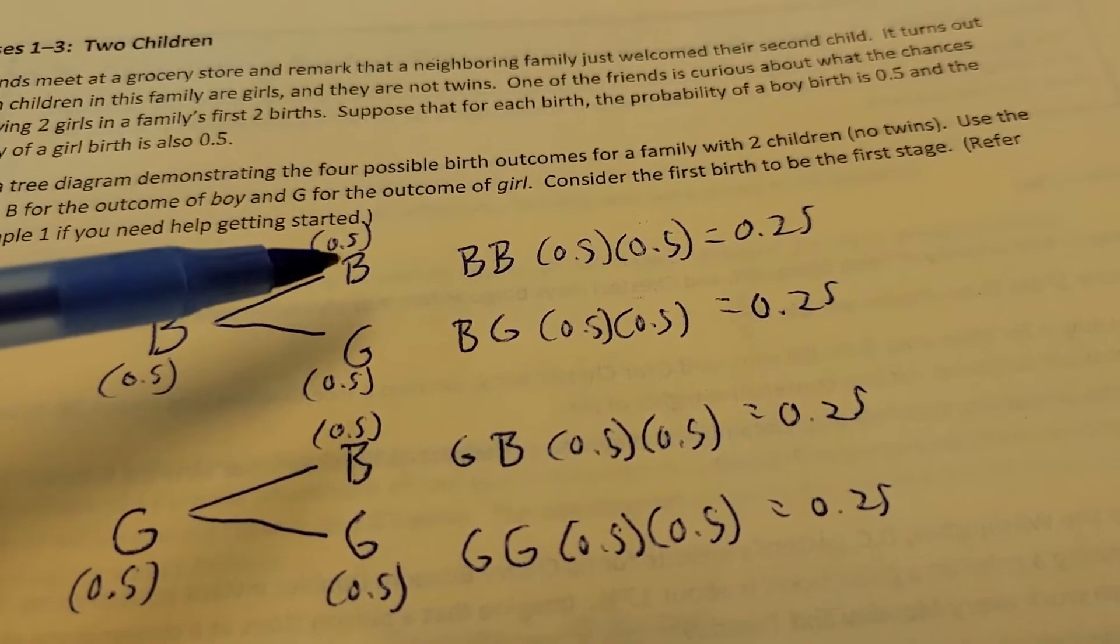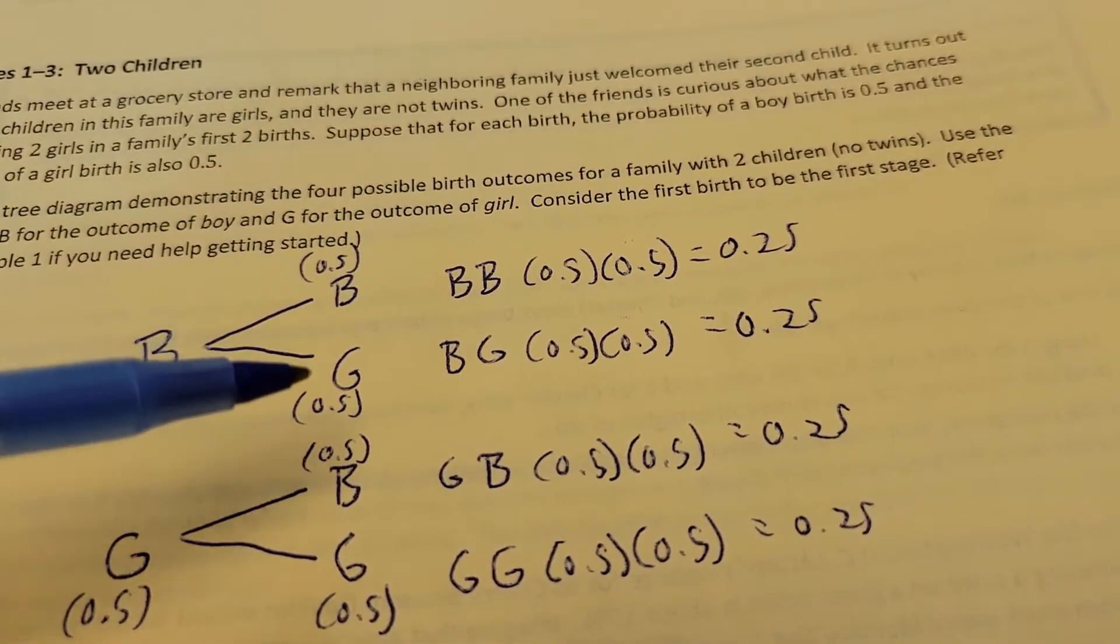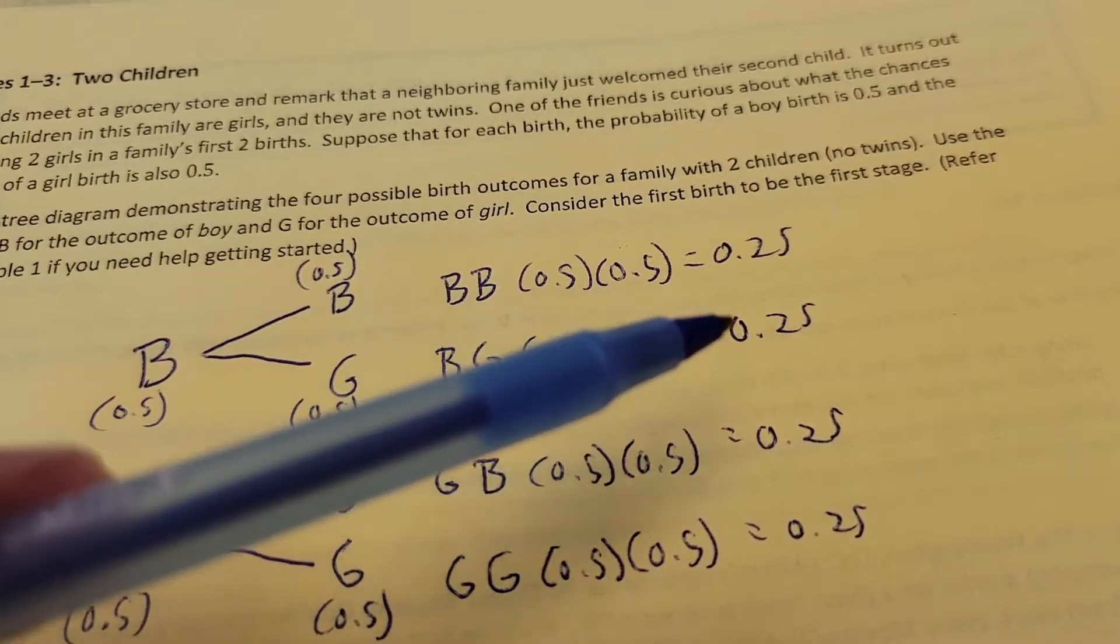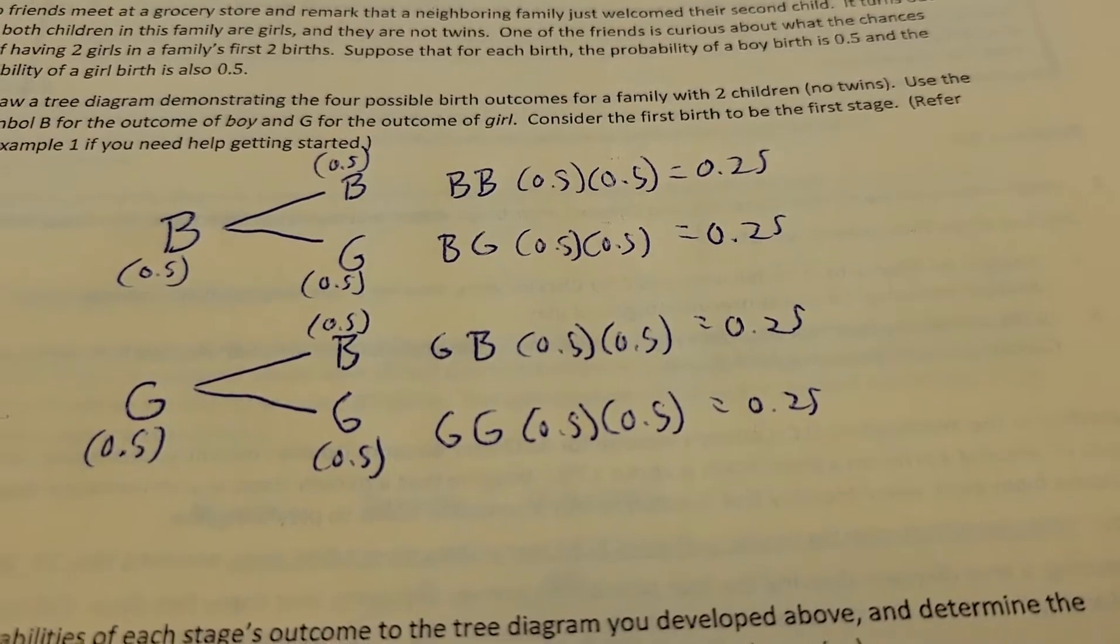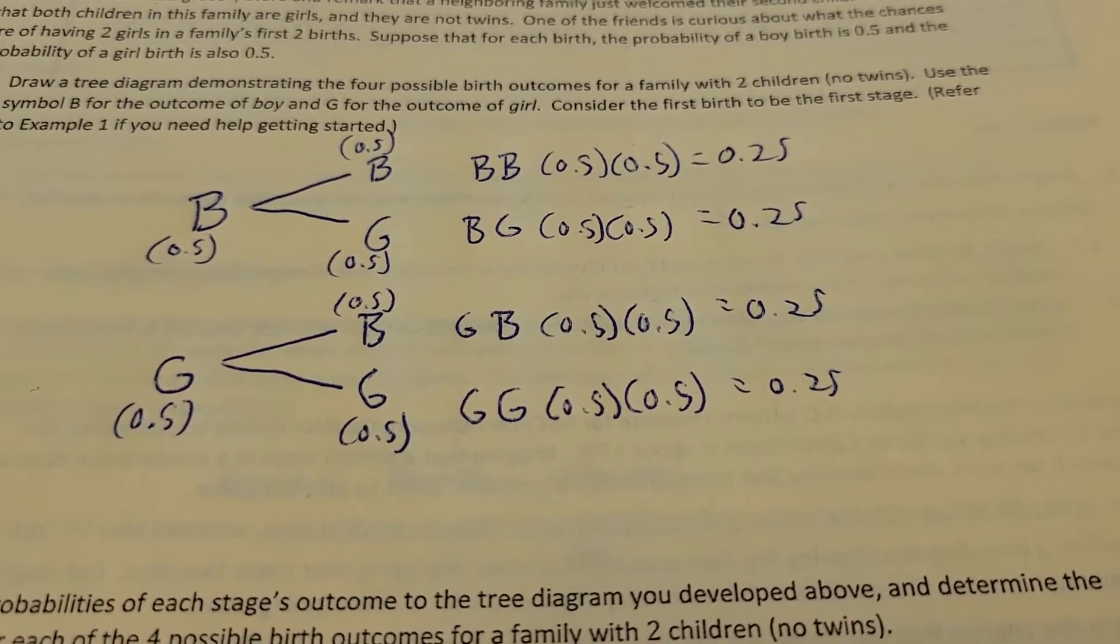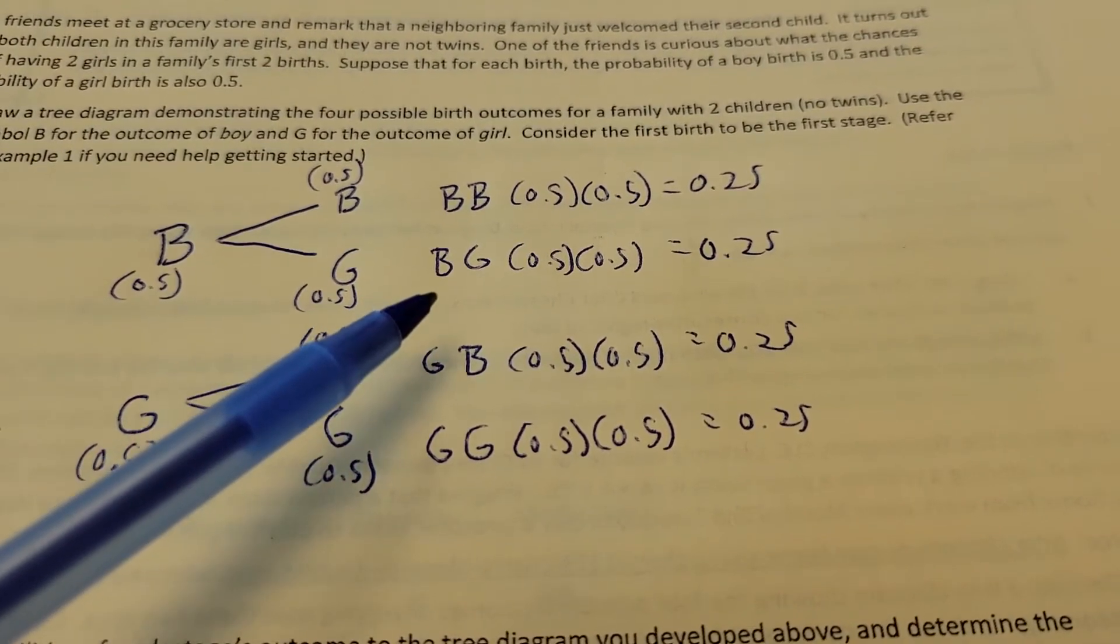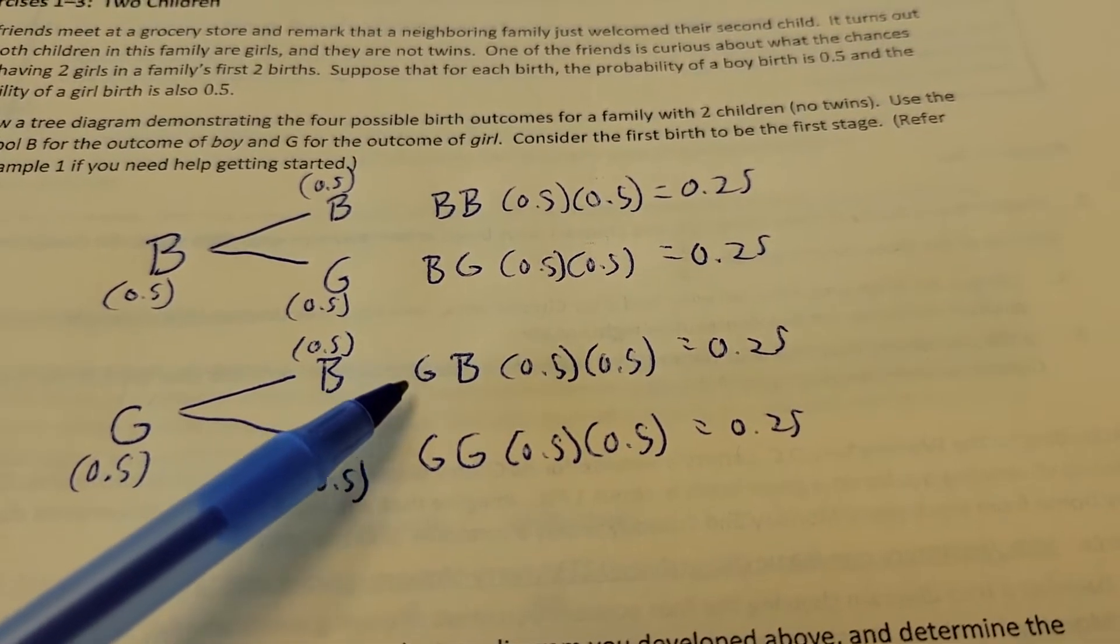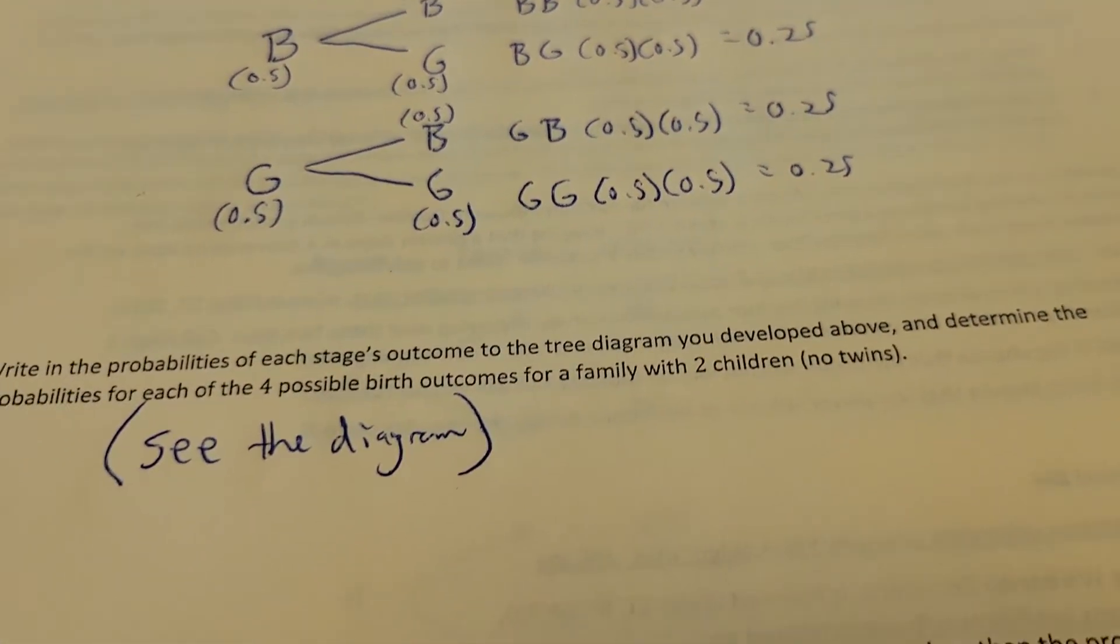Now boy, boy, 0.5 times 0.5 is 0.25. Have a boy first, girl second, 0.5 times 0.5, 0.25. As you can see, they all end up being 0.25 or a one-fourth chance of happening. So you had a 1 out of 4 chance of having two boys, 1 out of 4 chance of having a boy then a girl, 1 out of 4 chance of having a girl then a boy, 1 out of 4 chance to have two girls.